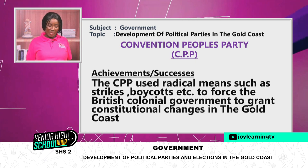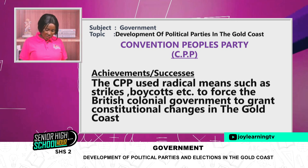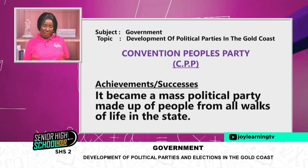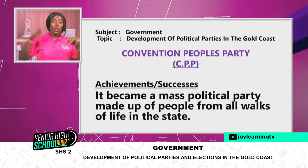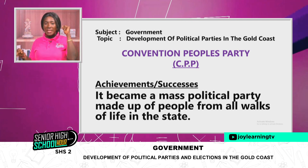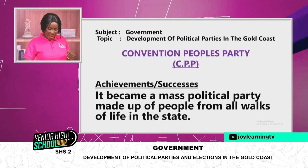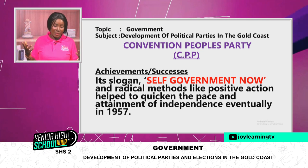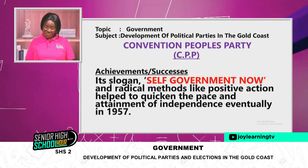The CPP used radical means such as strikes, boycotts, demonstrations, and civil disobedience to force the British colonial government to grant constitutional changes to the Gold Coast. It became a mass political party made up of people from all walks of life — lawyers, teachers, shoemakers, traders, Ashantis, Ga, Guans, Northerners. Its slogan 'self-government now' was more appealing, and radical methods like positive action helped quicken the pace of independence, eventually achieved in 1957.